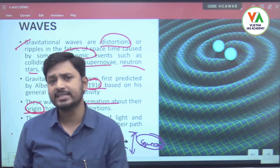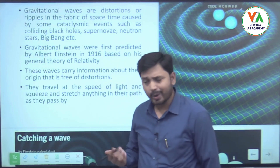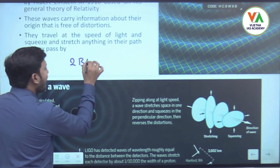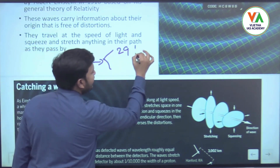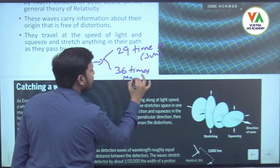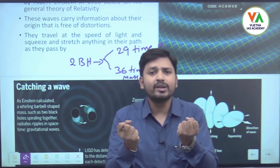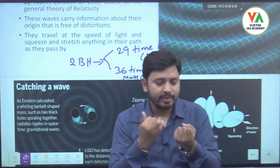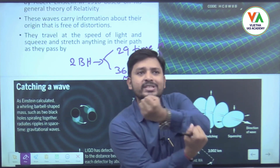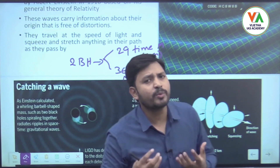Around 1.3 billion years ago, an event took place in space involving two black holes — one with a mass of about 29 times the Sun and another about 36 times the mass of the Sun. These two black holes started coming close to each other, orbiting around one another due to their immense gravitational attraction.